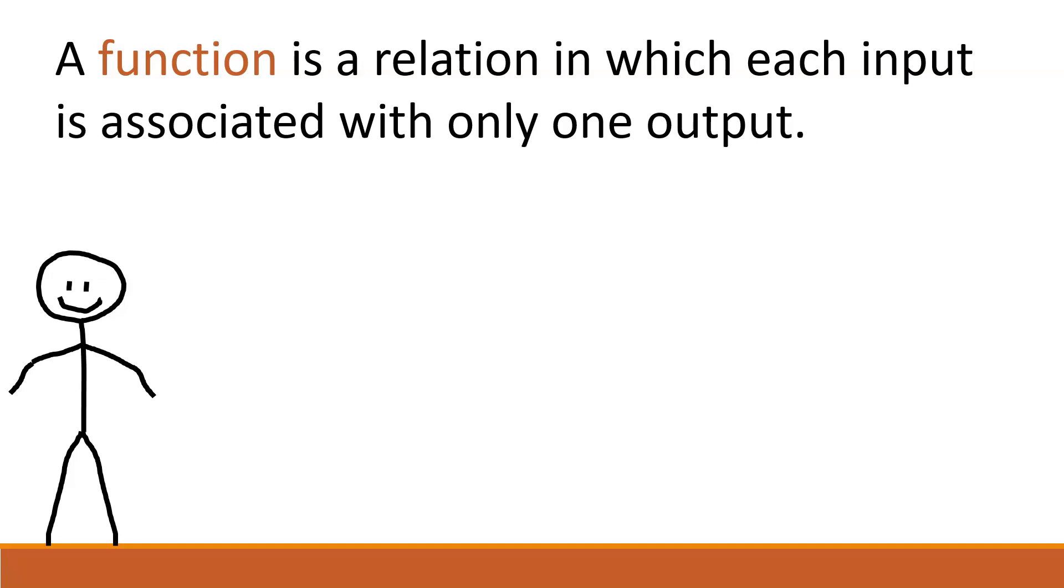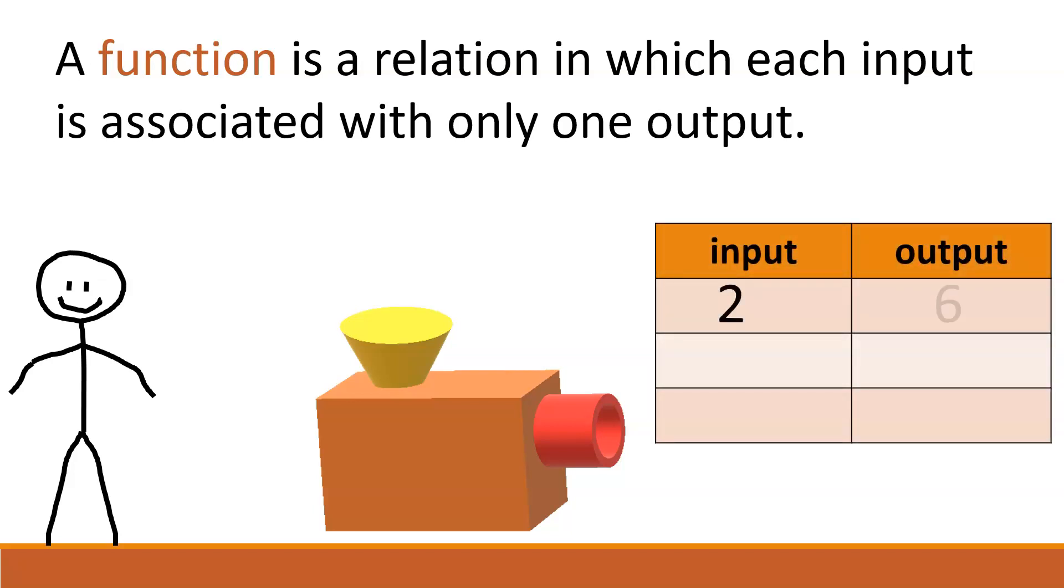But maybe you'd like to see what this looks like with numbers. Okay, it's really the same thing. Think about this machine. An input of 2 gives an output of 6. An input of 3 gives an output of 9. And an input of 4 gives an output of 12. We still have input-output pairs, and we can still look at the relationship between those to determine if we have a function.